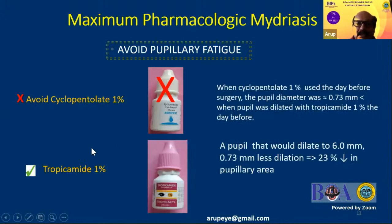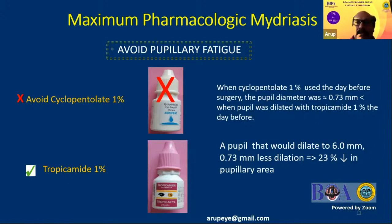Pupillary fatigue is something you need to avoid. If you are using cyclopentolate the day before surgery, it has been shown to reduce pupillary dilation by a factor of 0.73 millimeters compared to using tropicamide 1%. So if you want to dilate to six millimeters, you get 0.73 mm less dilation because of cyclopentolate the day before — resulting in a 23% reduction in pupillary area.